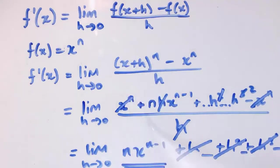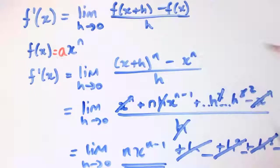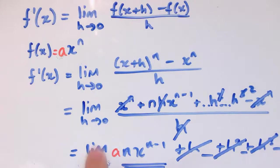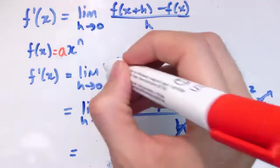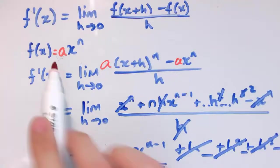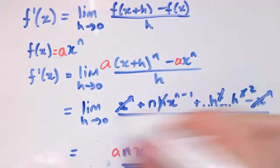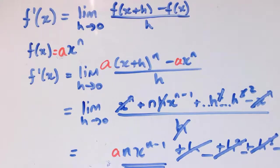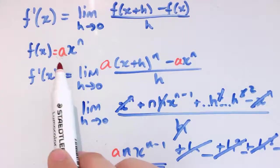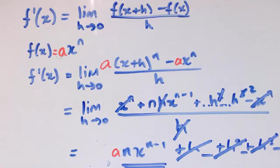This is for a positive integer n using the binomial expansion. We can generalize slightly: if we want the derivative of a·xⁿ, the answer is a·n·x^(n−1). If there's an a in the function it carries through the whole calculation, so everything gets multiplied by a. In fact, it's always the case that multiplying a function by a constant means the derivative is also multiplied by that same constant.